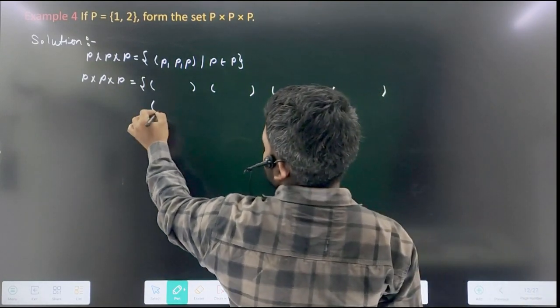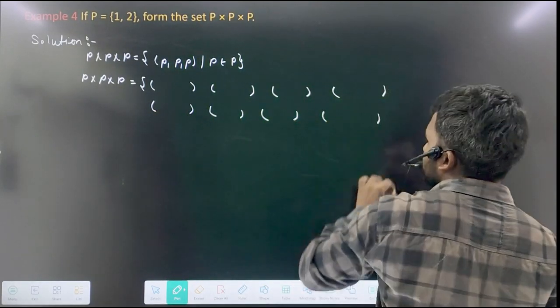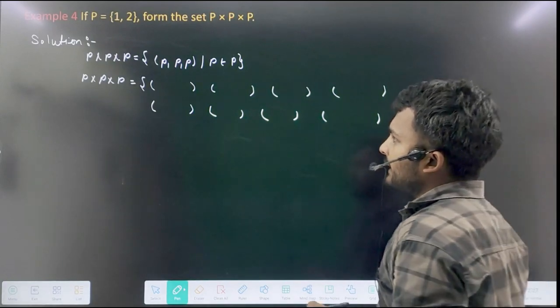So you should make 8 brackets here. Make this one first, then here, then here. Clear? Now what will we do here?